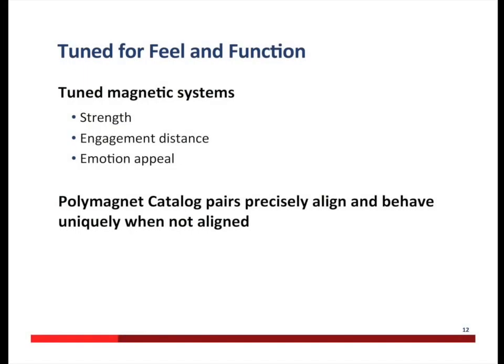The magnets I'm going to describe have the same physical characteristics — they're the same size magnets, yet they come with different alignment characteristics. So you, as a product designer, can choose the one that meets your product design requirements. That is why we describe polymagnets as allowing you, as a product designer, to tune the feel and function of the product you design by choosing the polymagnet that best suits your needs. You can now evoke an emotional response in your product's customer from the behavior of the magnets.